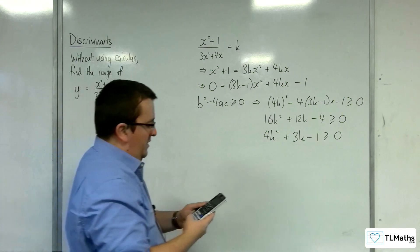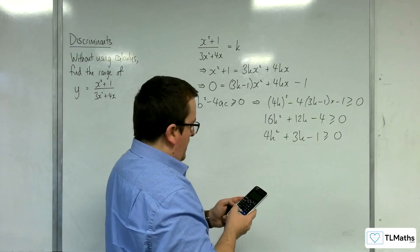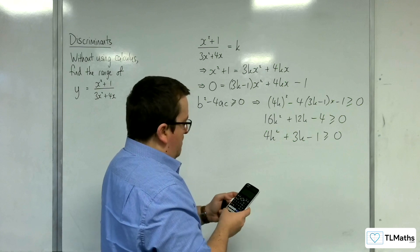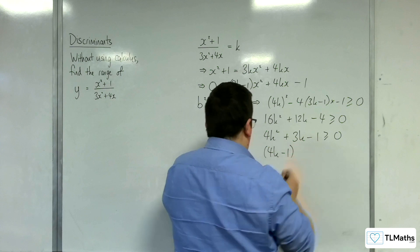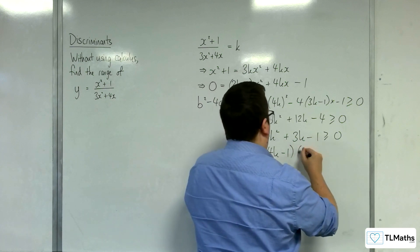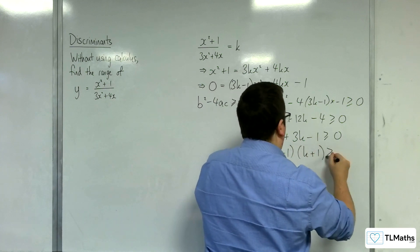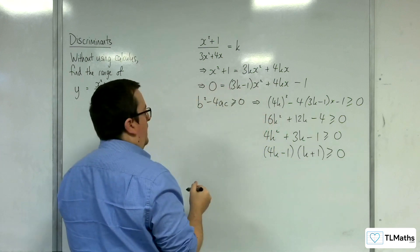So I'm just going to pop this into my quadratic solver. So 4, 3, and minus 1. And we get 1 quarter. So we'd have 4k minus 1 and minus 1. So k plus 1 is greater than or equal to 0.